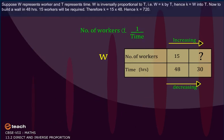Suppose w represents worker and t represents time. w is inversely proportional to t. That is, w is equal to k by t. Hence, k is equal to w into t.